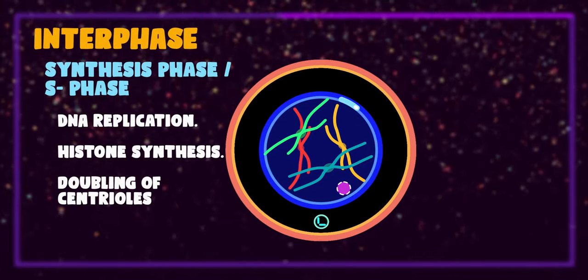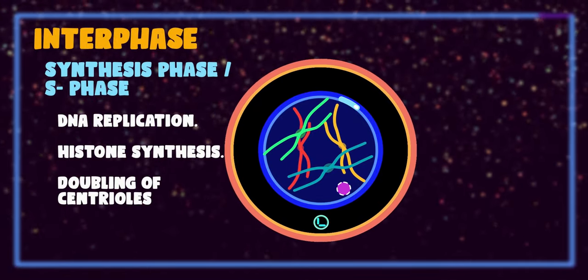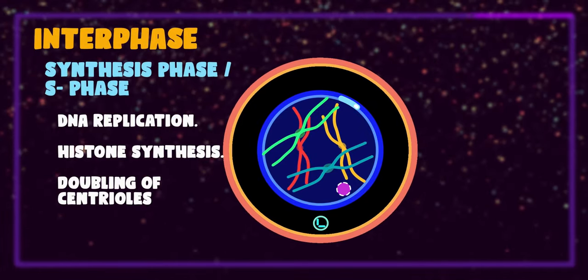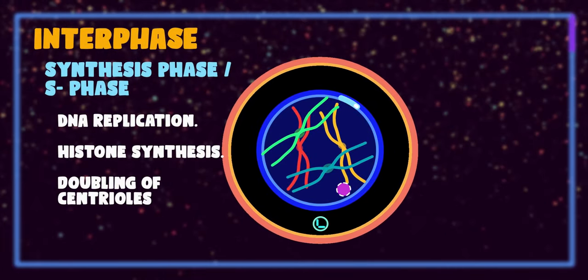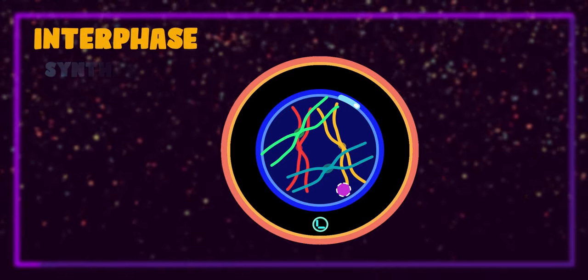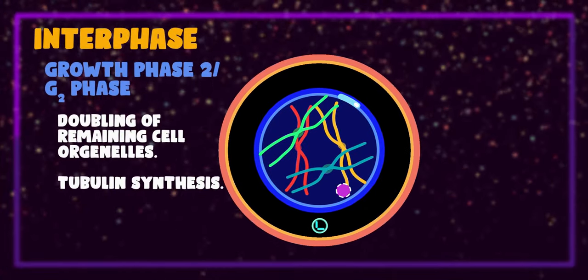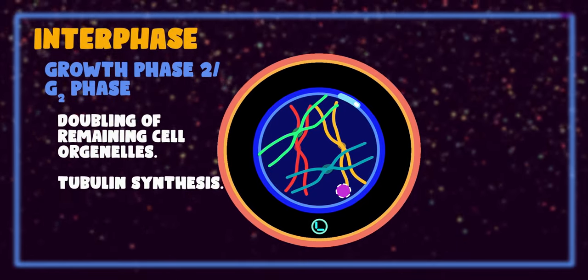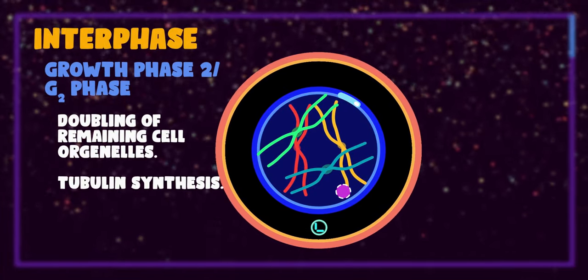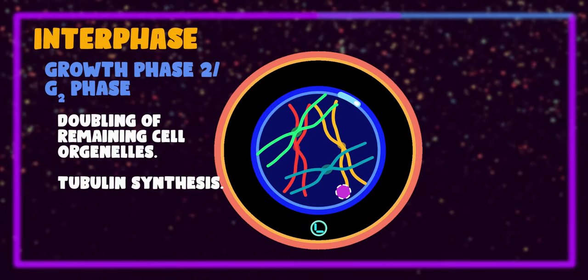Along with it, histone proteins are also synthesized to pack the DNA, and remaining cell organelles are doubled in G2 phase. Also synthesis of tubulin proteins occurs during this phase, which will be used in spindle fiber formation.